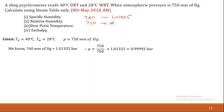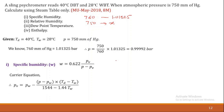Now let us find specific humidity. Specific humidity is the mass of water vapor present in air per kg of dry air. The formula is: specific humidity = 0.622 × PV / (P − PV), where PV is the partial pressure of water vapor and P is atmospheric pressure. To find PV, we use the Carrier equation: PV = PW − (P − PW)(TD − TW) / (1544 − 1.44 × TW).